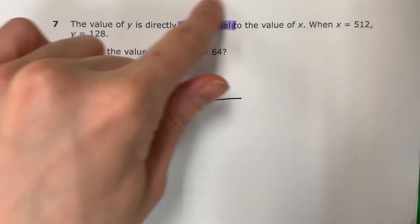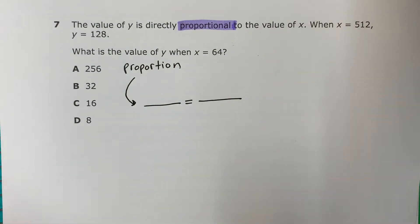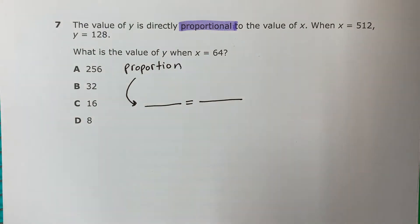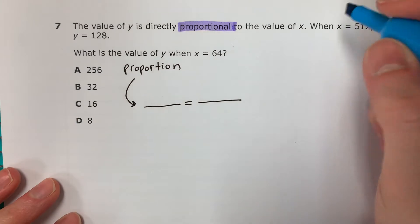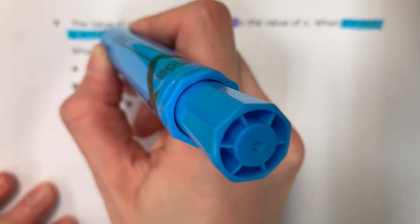So remember, recuerda, if you see this word, si hay esta palabra, you're going to do this. And we are going to compare some numbers. Vamos a comparar algunos números. So my first pair, mi primer par, is X 512, Y 128.